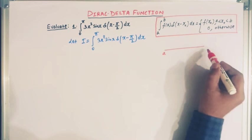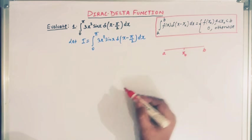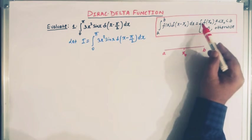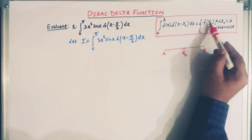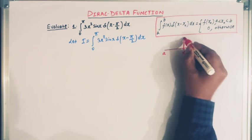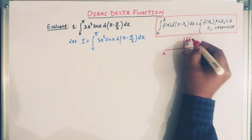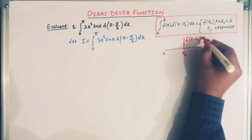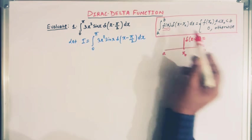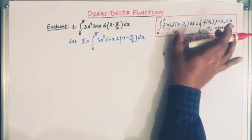So here we have the point a, here we have the point b, and here we have the point x₀. The value of this integral from a to b is equal to the value of the function at x₀. This is δ(x - x₀), which picks out the value of f(x) at x equal to x₀.